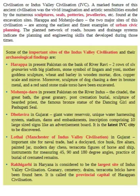Some important sites of the Indus Valley Civilization: Harappa, in present-day Pakistan on the bank of river Ravi — two rows of six granaries with a big platform, stone symbols of lingam and yoni, mother goddess sculpture, wheat and barley in wooden mortar, dice, copper scale and mirror. Also, a sculpture of a dog chasing a deer in bronze metal, and a red sandstone male torso have been excavated.